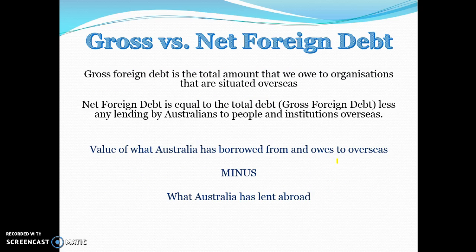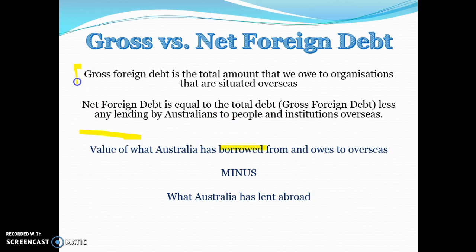Gross versus net foreign debt: gross debt is the total amount we owe to organisations overseas. Net foreign debt is what we owe overseas minus what we've lent overseas — net always has that minus figure in it. Gross foreign debt will always be higher because it doesn't subtract what we've lent to other countries.